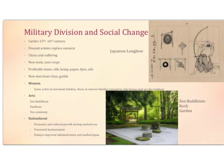We're at the end of Japan. Let's talk about military division and social change. From the 15th to 16th century, there are castles, and peasant armies begin to replace the samurai — a decline of the samurai. There is a lot of chaos and suffering, but also new tools, new crops, and the growth of profitable items such as silk, hemp, paper, dyes, and oil. There's a new merchant class that sets up guilds. Notice how much of this resembles medieval Europe. Looking at the image on the right, you'll see the longbow. Women in merchant families were taught to sell items, and women in warrior families learned to ride horses and use the longbow as well.